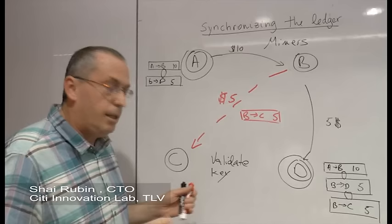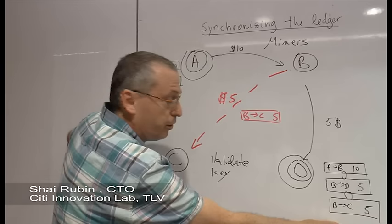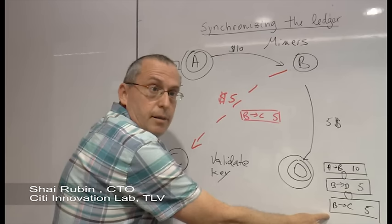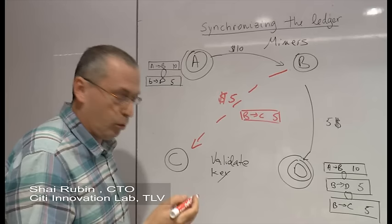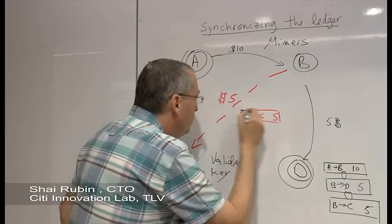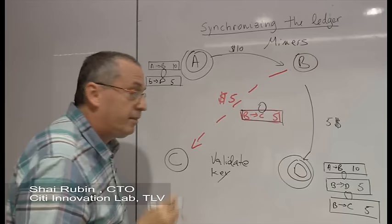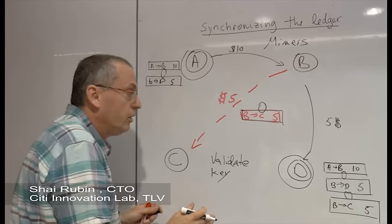Let's see how ledgers are synchronized across the network. The miner was able to solve the puzzle and be able to take this transaction and add it to its own ledger. What D is going to do now is going to publish the solution to the entire network, to broadcast it to the entire network. Which means he will say, here is a validated transaction and here is the lock, here is the key that enables everyone on the network to take it and add it to their own ledgers.